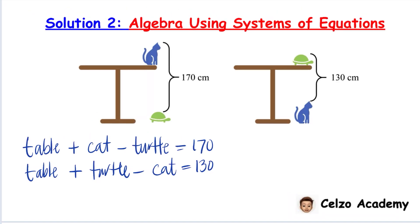Now let's solve the system of equations by addition method. Table plus table is equal to 2 table. Cat and minus cat, that's 0. Turtle and negative turtle is going to be 0 as well.